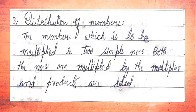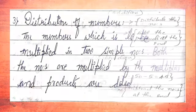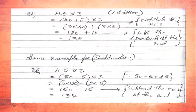The third property of multiplication is the distribution of numbers. The numbers to be multiplied are split into two simple numbers, both are multiplied by the multiplier, and the products are added. We will go through an example: the number is 45 × 3.